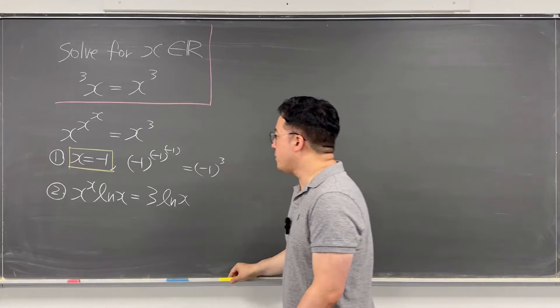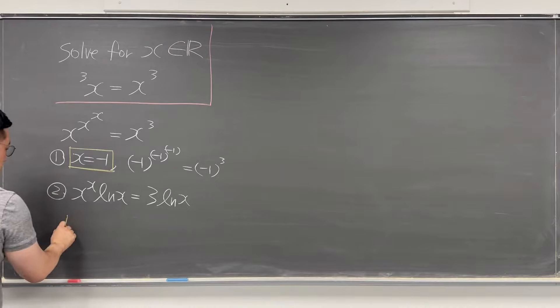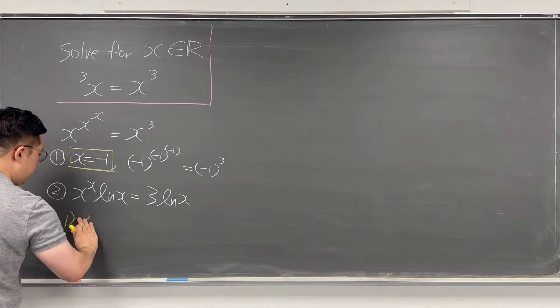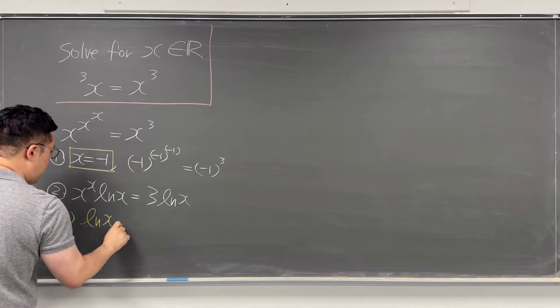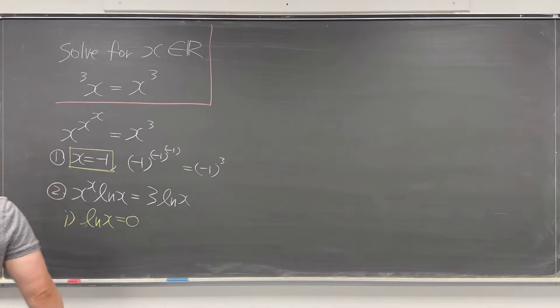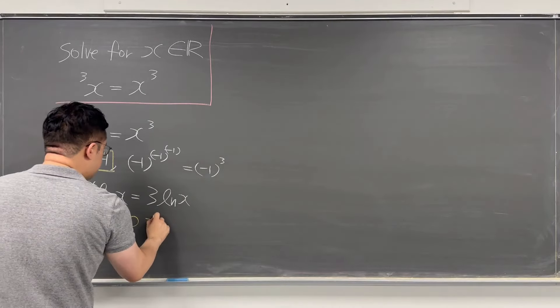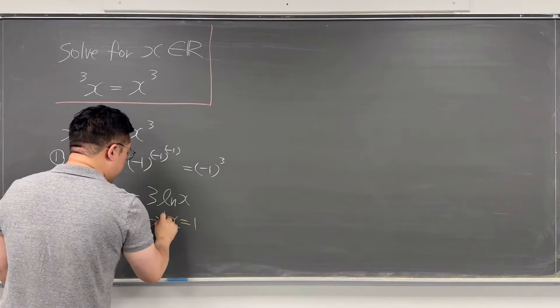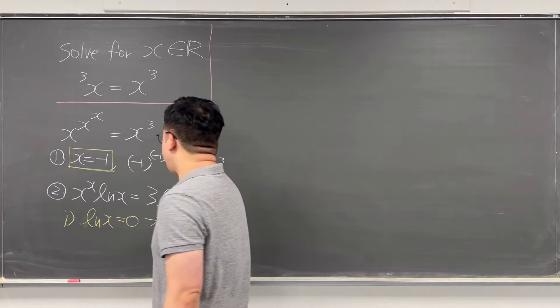So in this case, we can talk about, first of all, if ln x is equal to zero. So that's why x is equal to positive 1. This is another trivial solution.